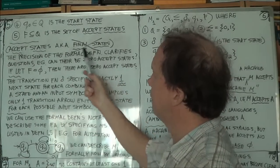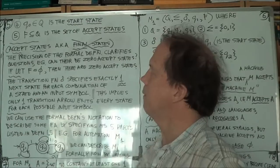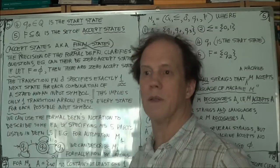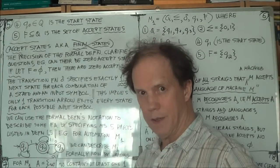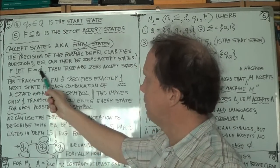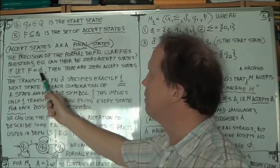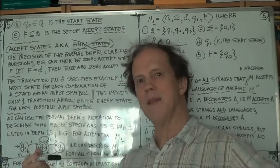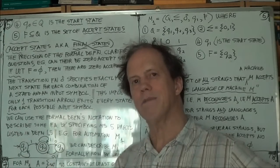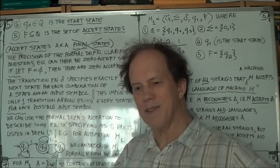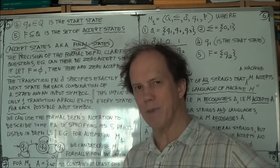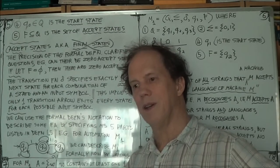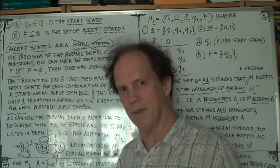Well, let F be a subset of Q. Now one subset of Q is the empty set. So if F is the empty set, then there are no accept states. Now if you think about what that means, that means that all strings get rejected. Because that means no string going in will ever be accepted, because the final state is always not an accept state, because there are no accept states. There are zero of them.